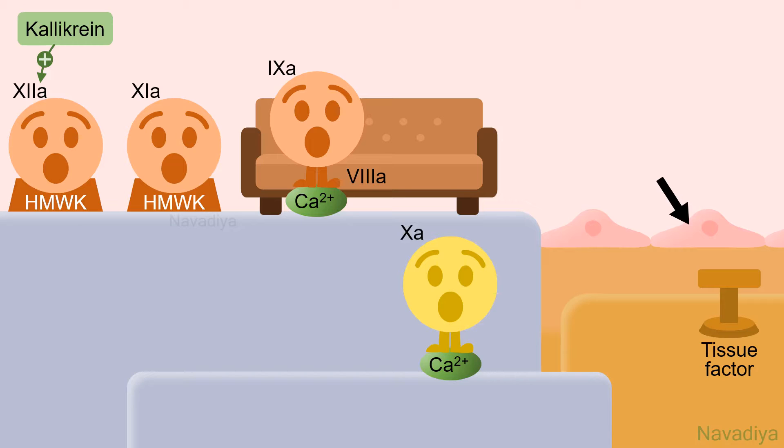See, under healthy conditions, endothelial cells prevent exposure of blood to the tissue factor. But when endothelium is disrupted, the tissue factor is exposed. So now factor 7 from the blood binds with tissue factor.